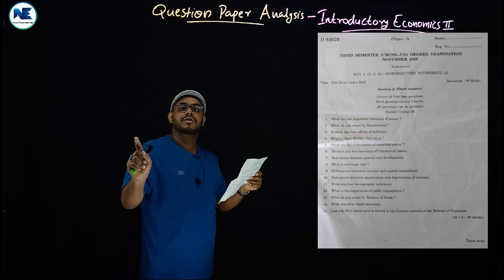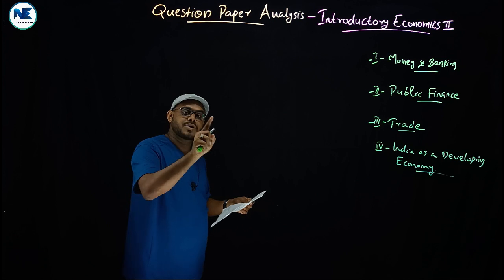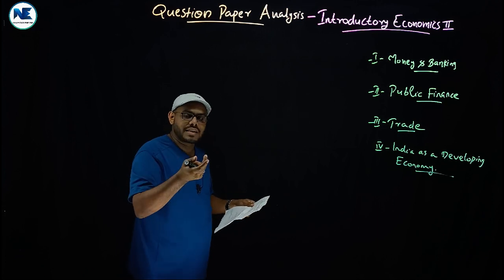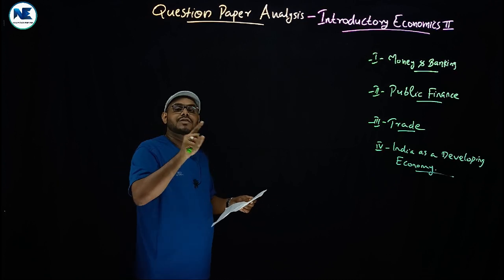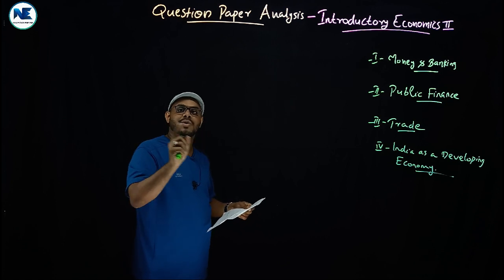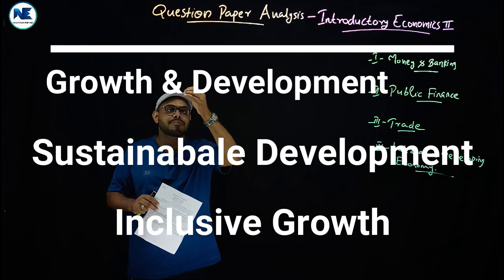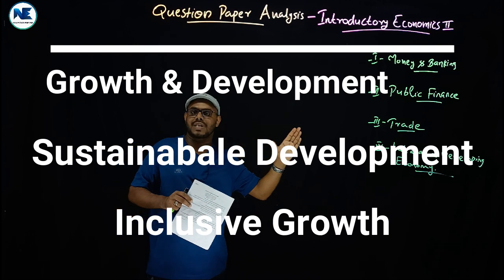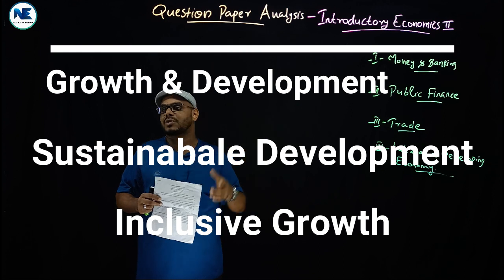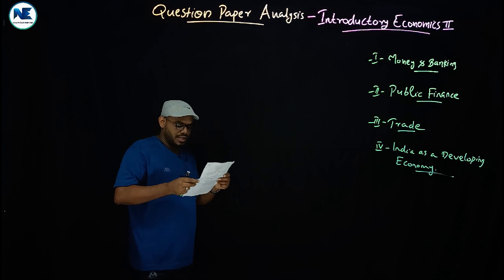The seventh question: distinguish between growth and development. Economic growth is an enhancement in the GDP of the country, per capita income, or national income. Economic development is economic growth plus social development, employment generation, reduction in inequality, elimination of poverty, and improvement in the quality and welfare of people. If development is environment-friendly and ecologically friendly, it is known as sustainable development. Inclusive growth means the benefits of growth are distributed among all segments of society.